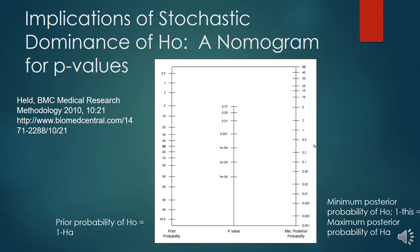The implications of stochastic dominance of the null hypothesis can be demonstrated with a nomogram from a report by Swiss statistician Held, which he calls a nomogram for p-values. It uses whatever we estimate the prior probability to be, modified by the results of frequentist data or a p-value, to arrive at a posterior probability of the null or alternative hypothesis. On the left side we have the prior probability of the null hypothesis — 50-50 means null and alternative are both 50%. If the prior probability of the null is 90%, the prior probability of the alternative will be 10%. P-values are in the center, and on the right side is the minimum posterior probability of the null hypothesis.